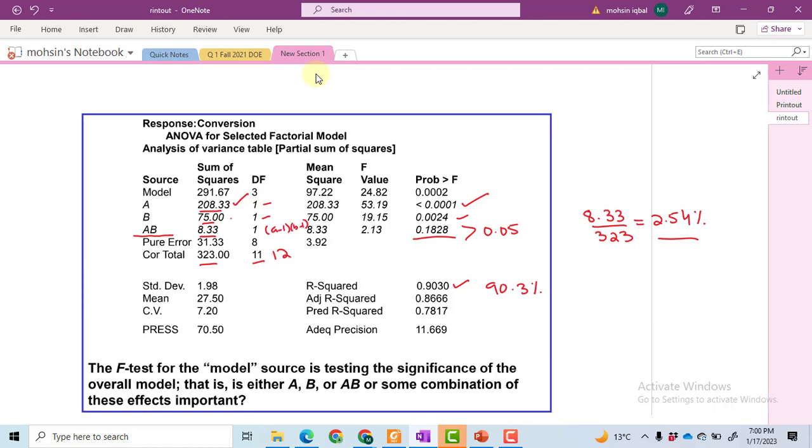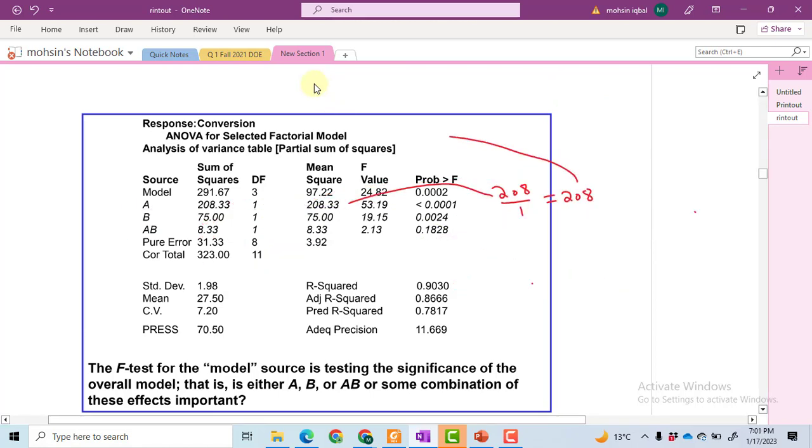The number of replications you perform—all those readings will be contributed to the pure error. For example, if I perform five replications, the four additional applications or 16 observations will be directly contributed to the pure error. In this case, we have only three replications, so one replication contributed toward the calculation of A. The mean square of B can be calculated as 75 divided by 1 degree of freedom.